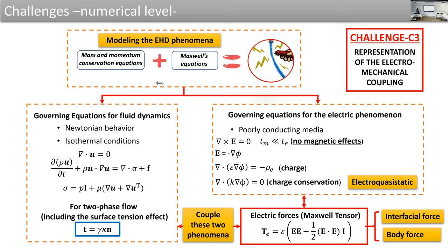A clarifying question is asked about the discontinuous electric field. The electric field is discontinuous due to the gradient of the electrical potential — that is the discontinuity being represented. Surface tension is constant and only acts at the surface.